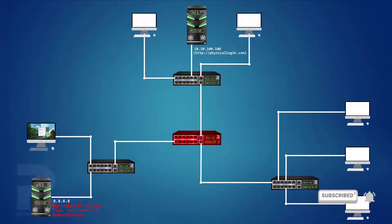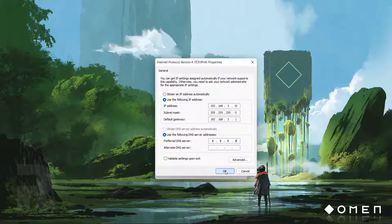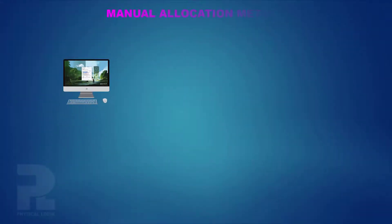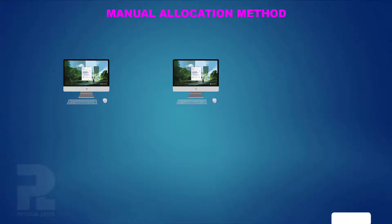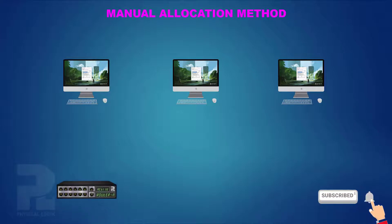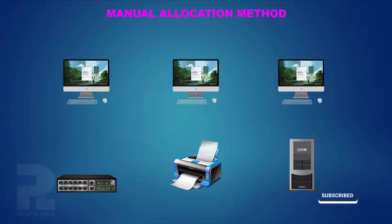More parameters may also be configured if necessary. This method of assigning network parameters is called manual allocation, and it is suitable for scenarios where only a few devices need to be configured or where devices need a fixed address, such as a gateway router, printer, or server on the network. These parameters, once assigned, remain permanent unless modified by the network administrator.